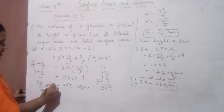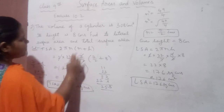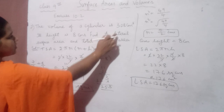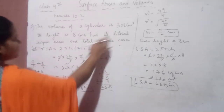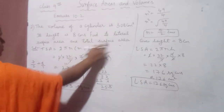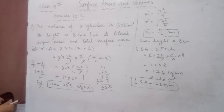So we got both the lateral surface area and the total surface area. LSA = 176 cm² and TSA = 253 cm². These are written in short forms; you can write the full forms in your books.